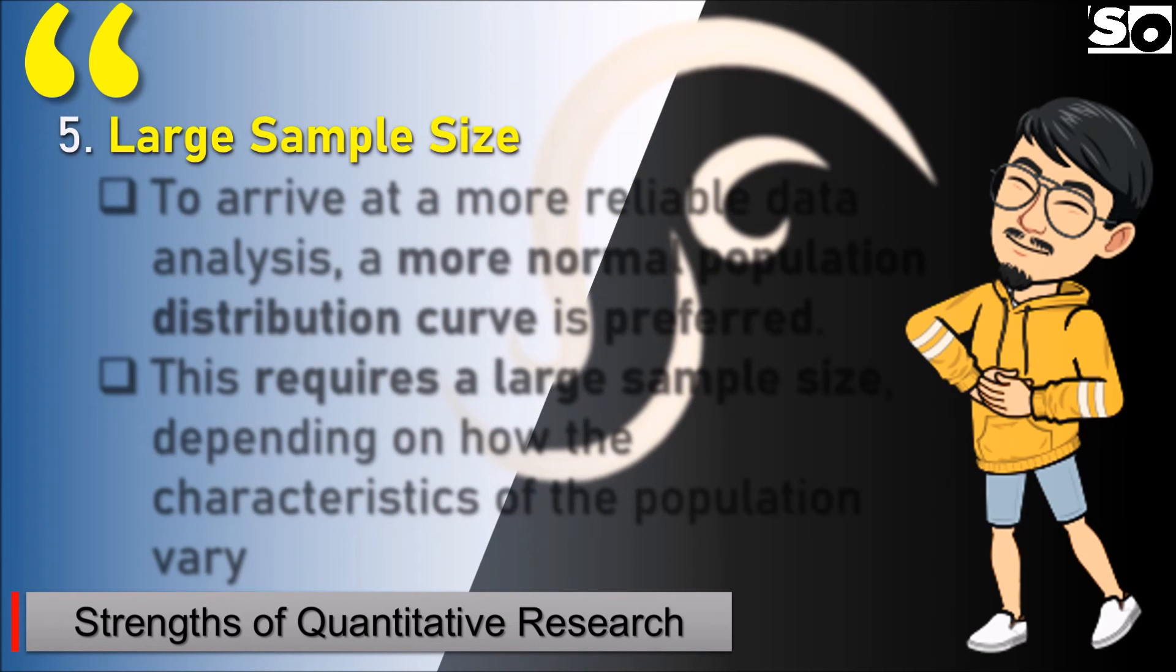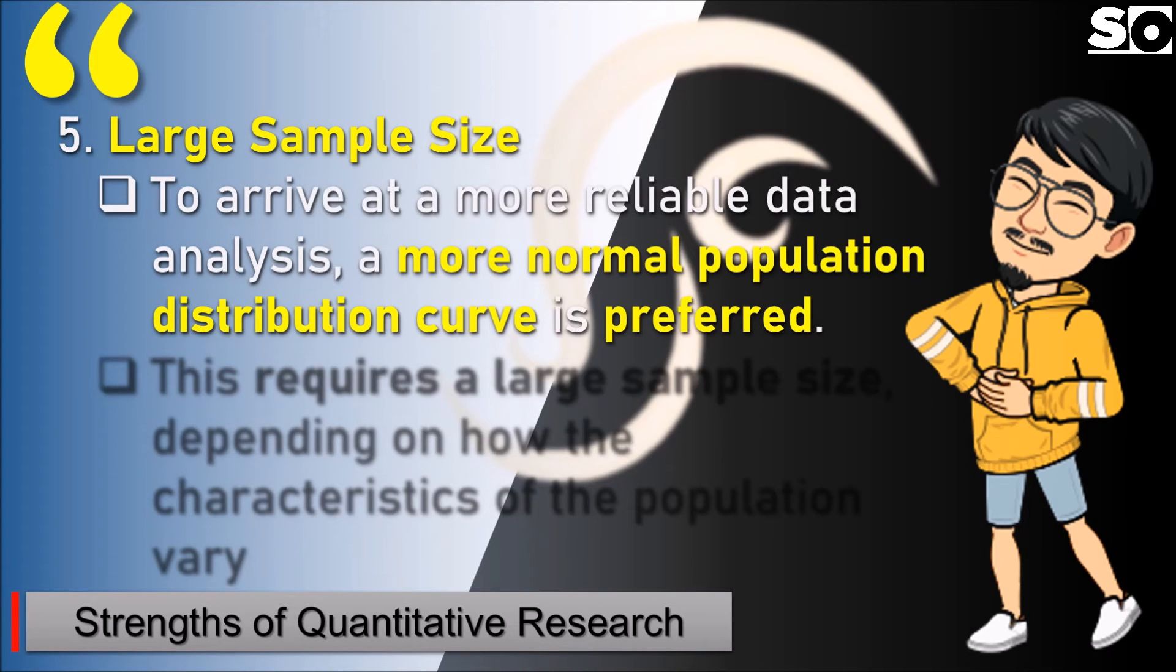Lastly, large sample size. To arrive at more reliable data analysis, a more normal population distribution curve is preferred. This requires a large sample depending on how the characteristics of the population vary. Always remember that as participants or respondents answering our survey questionnaire increase, the greater the chance of obtaining good results, because more respondents mean a larger percentage representing an institution.